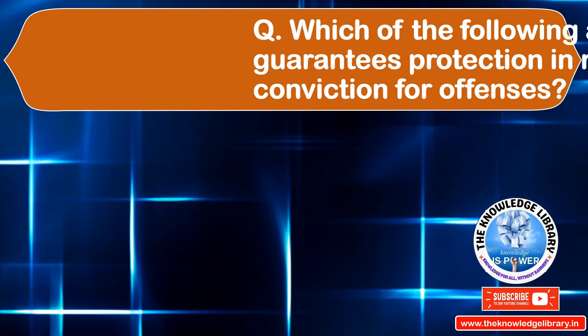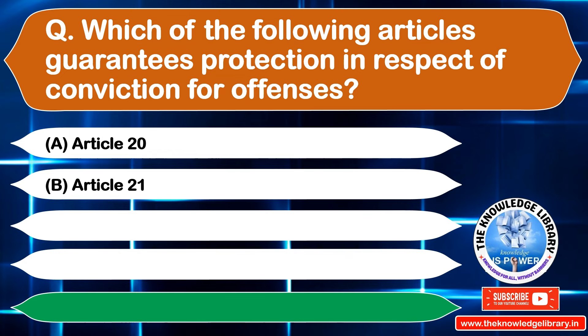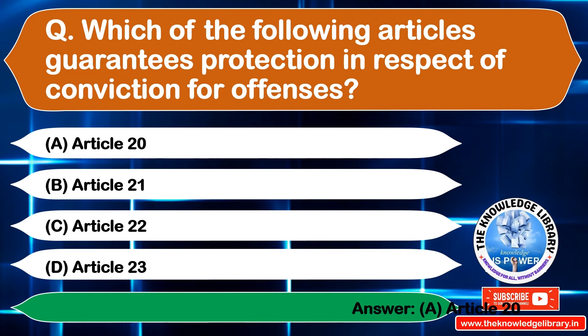The next question is: which article guarantees protection in respect of conviction for offences? Option A: Article 20, Option B: Article 21, Option C: Article 22, Option D: Article 23. The correct answer is Option A: Article 20.